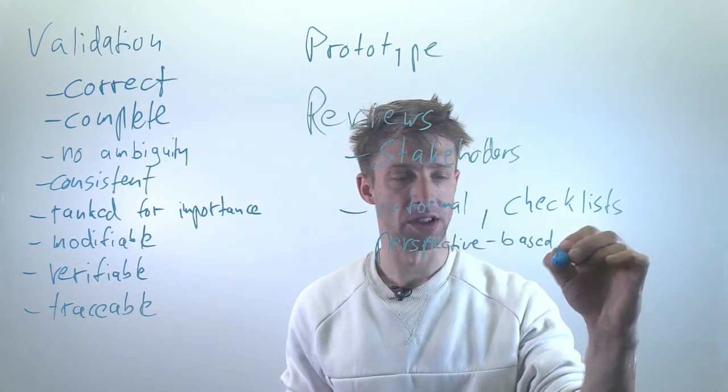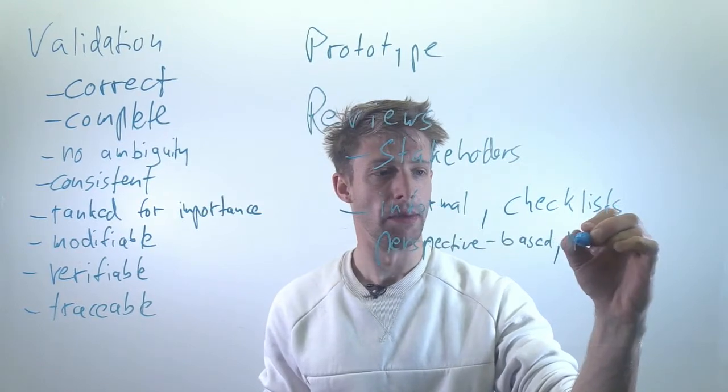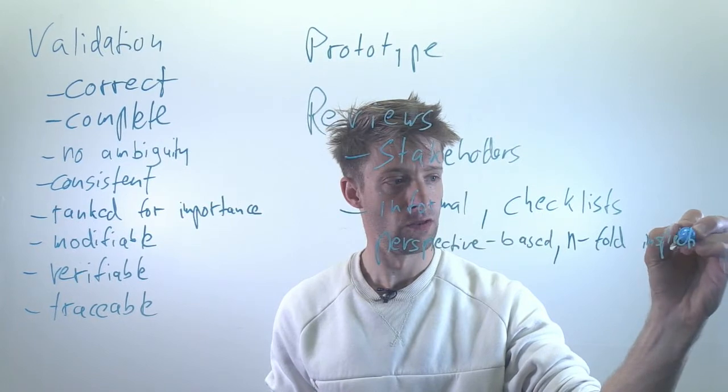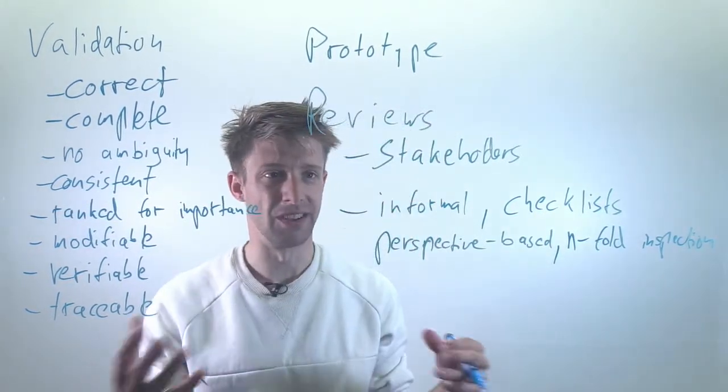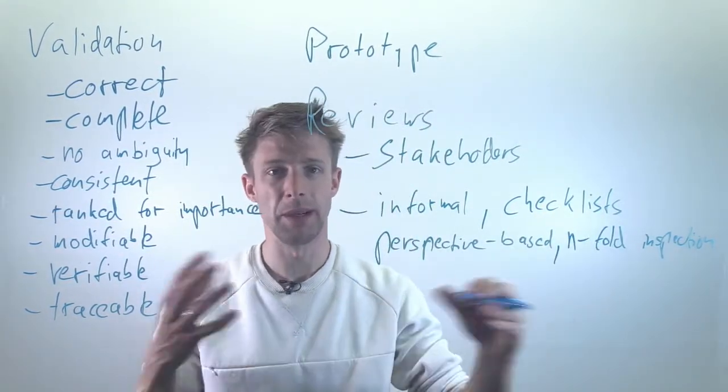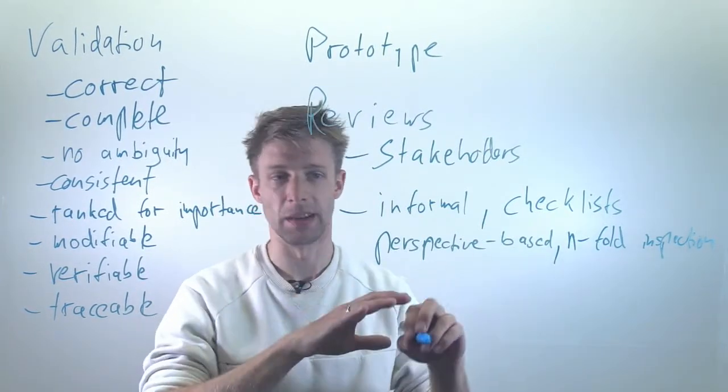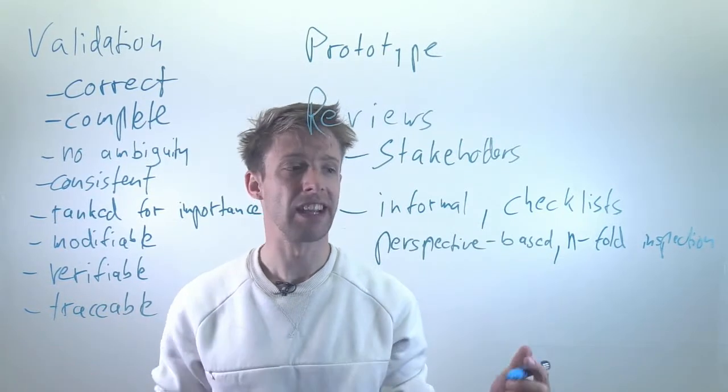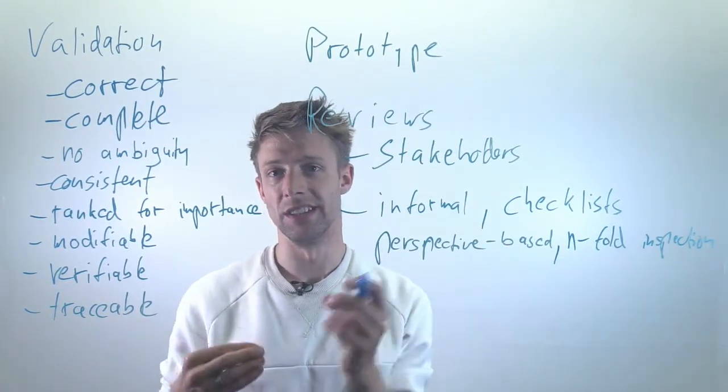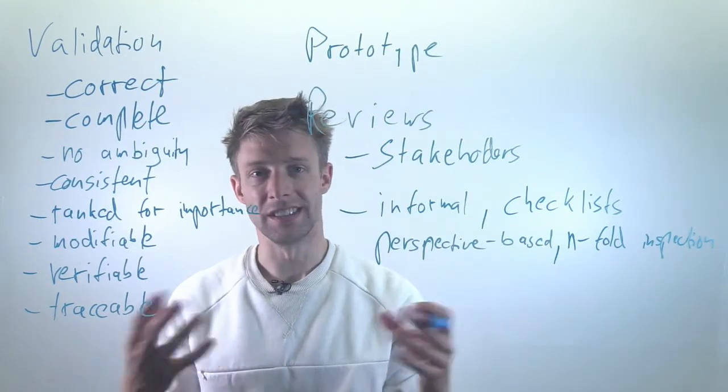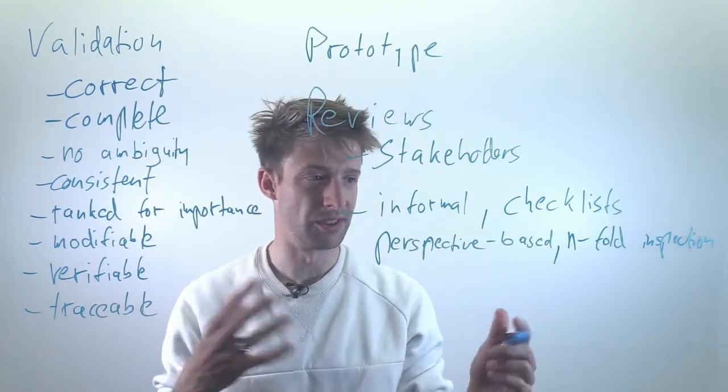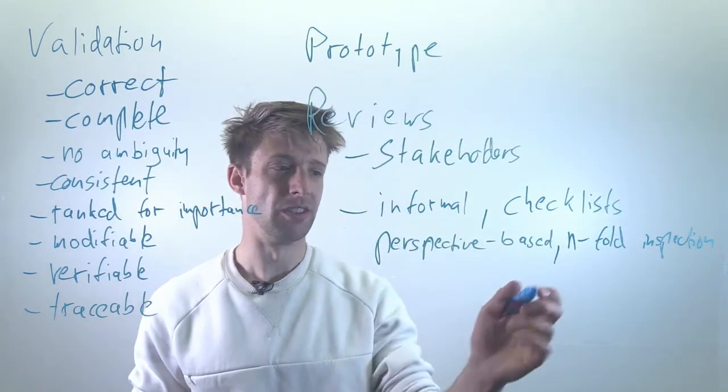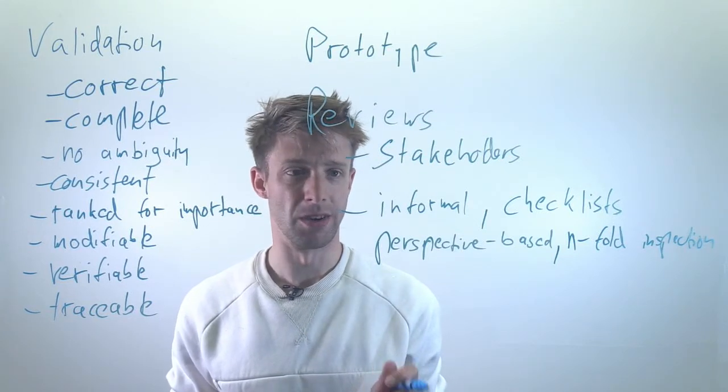And then just for completeness, I'm not sure how common this is, but there is something called n-fold inspection. And that basically means you break down the review into n-groups and n-people read it in parallel and they discuss and then they come together. And that's just to, well, to parallelize it, to have many eyes looking at it, but also to avoid that they influence each other. So in their n-groups they discuss the issues and then they discuss the issues altogether and so on. So there is a specific protocol on how to do this. I won't go into detail, but just so you have heard the term as well.